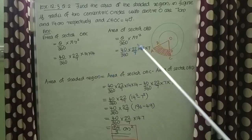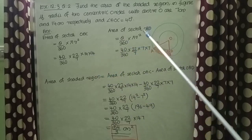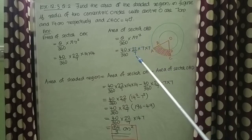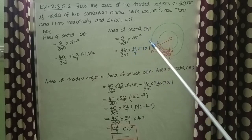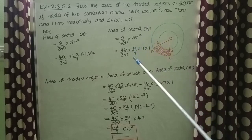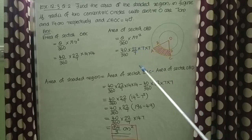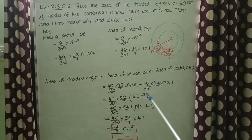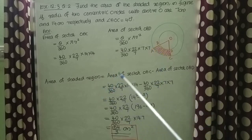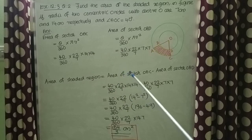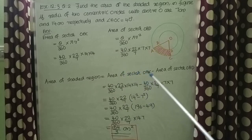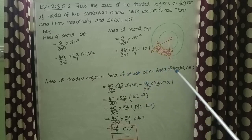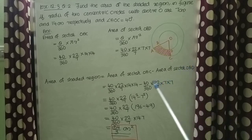Area of sector OBD equals theta by 360 into pi R square, equal to 40 by 360 into 22 by 7 into 7 into 7. Area of shaded region equals area of sector OAC minus area of sector OBD.